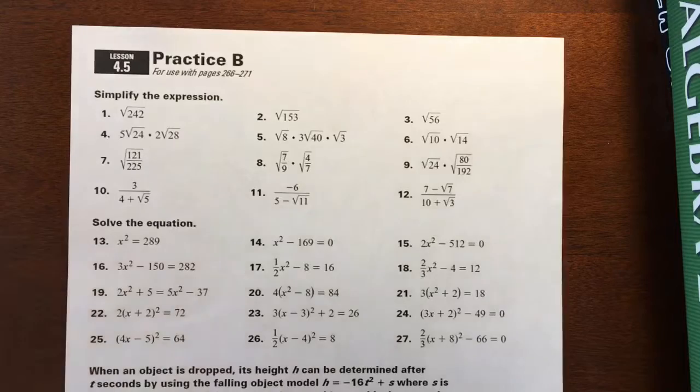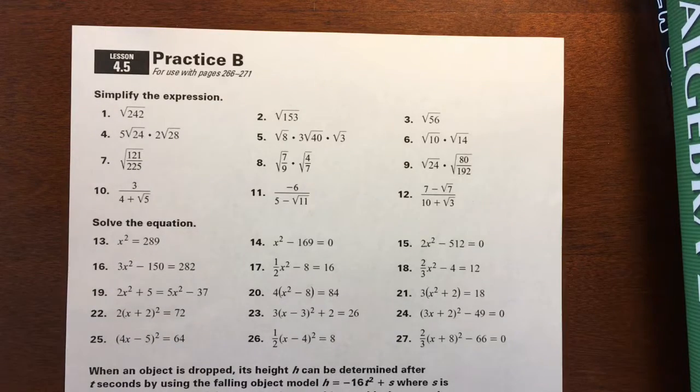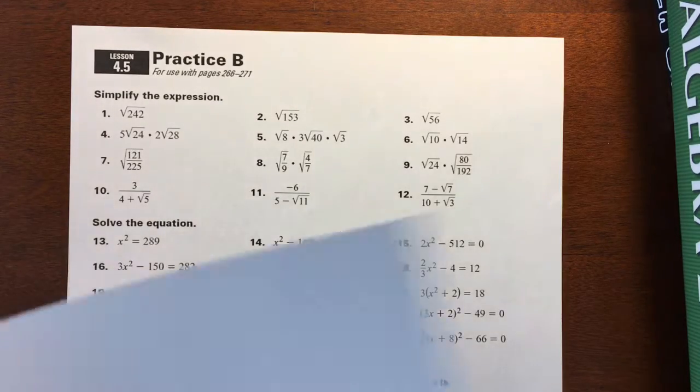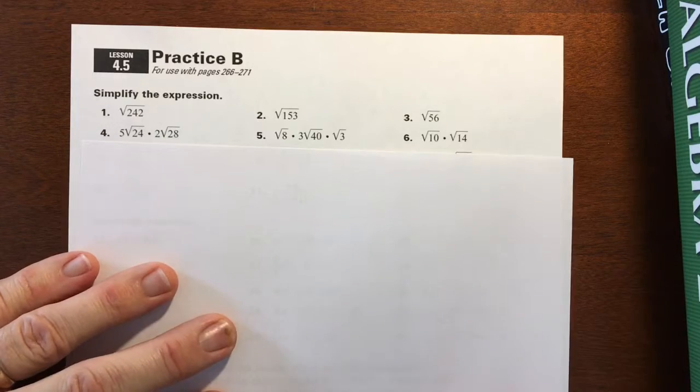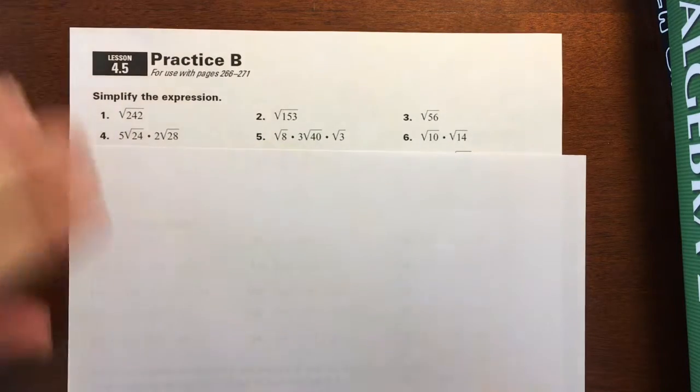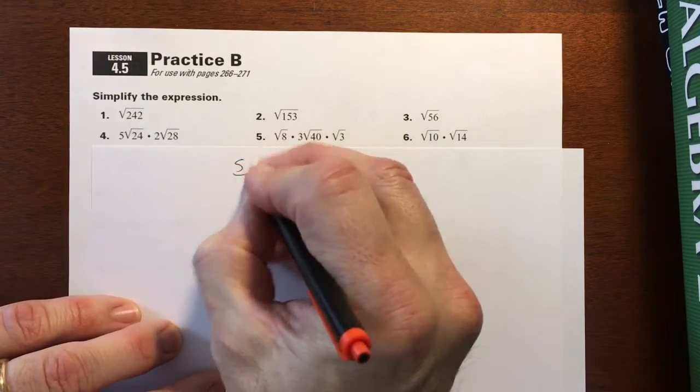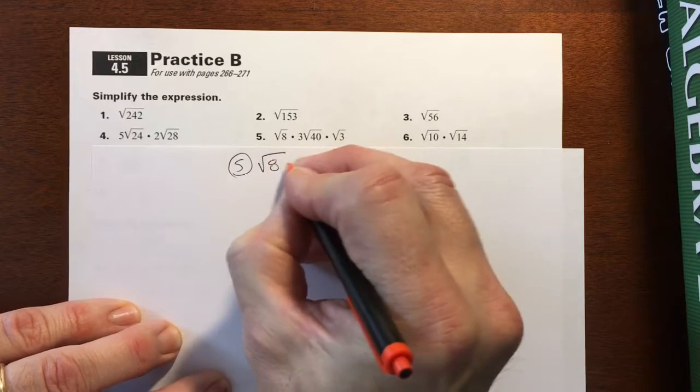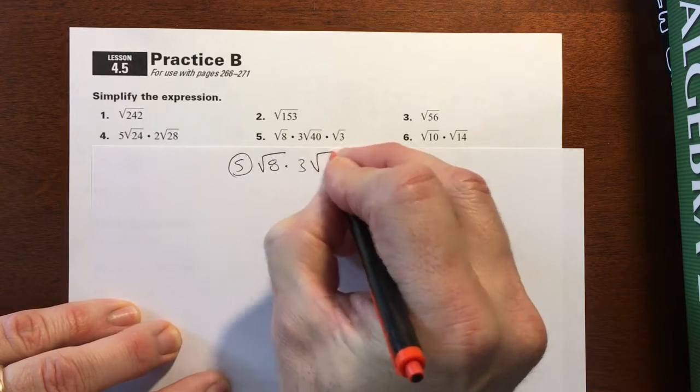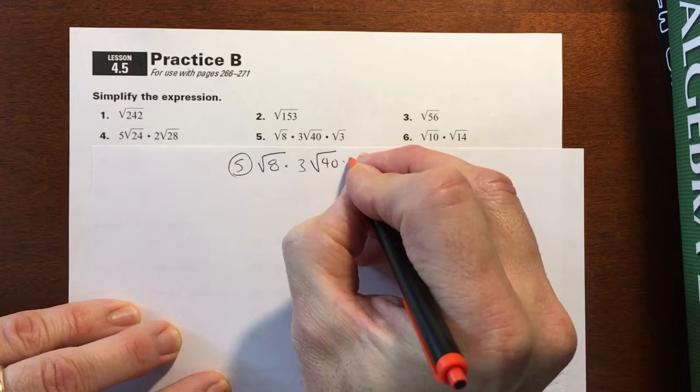All right, I'll show you a couple on the B side as well to help you. B side. I have chosen number 5 and 9 on this side, in case you're struggling with these types as well. So here's 5, I'm just going to rewrite it for you. Square root of 8 times 3 square root of 40 times square root of 3.